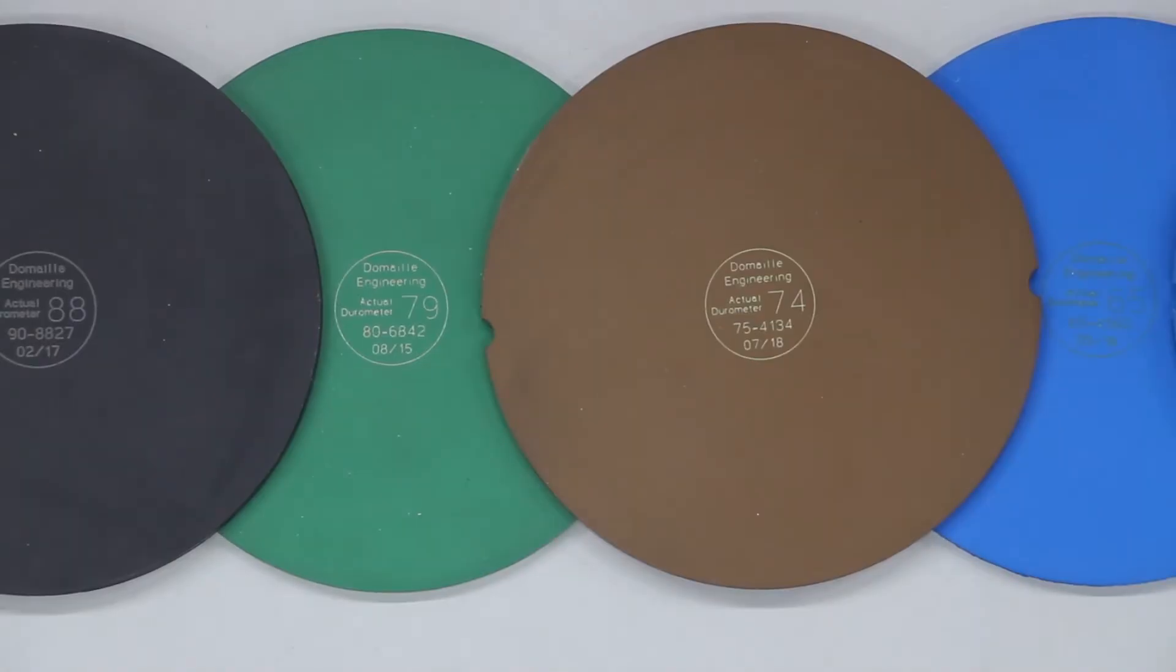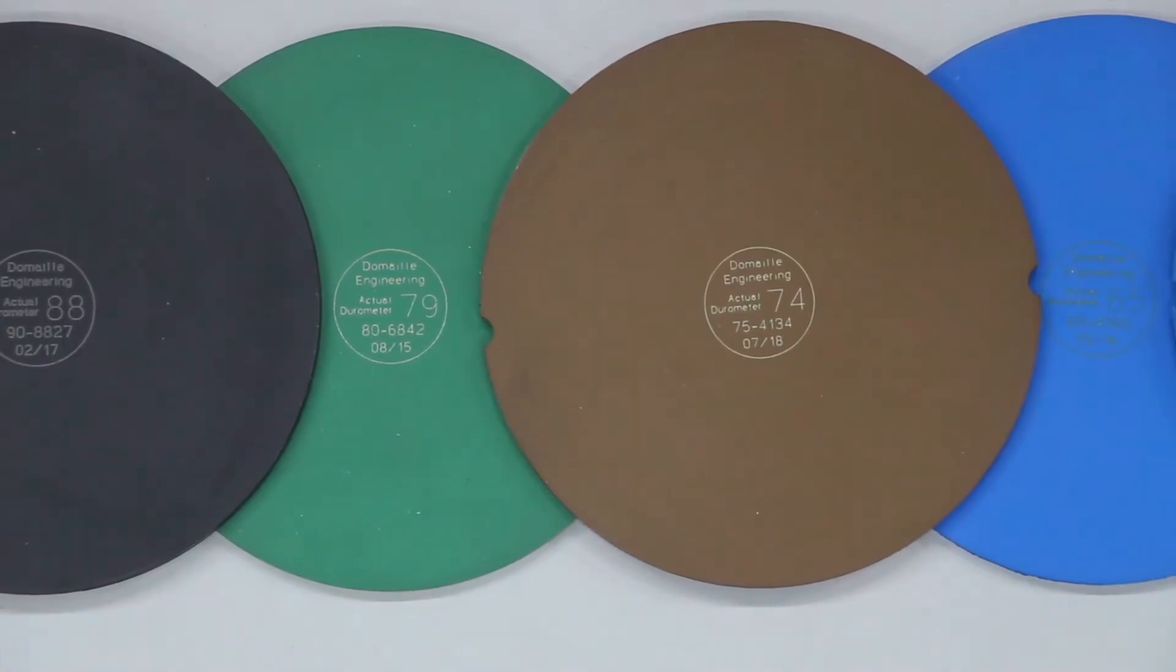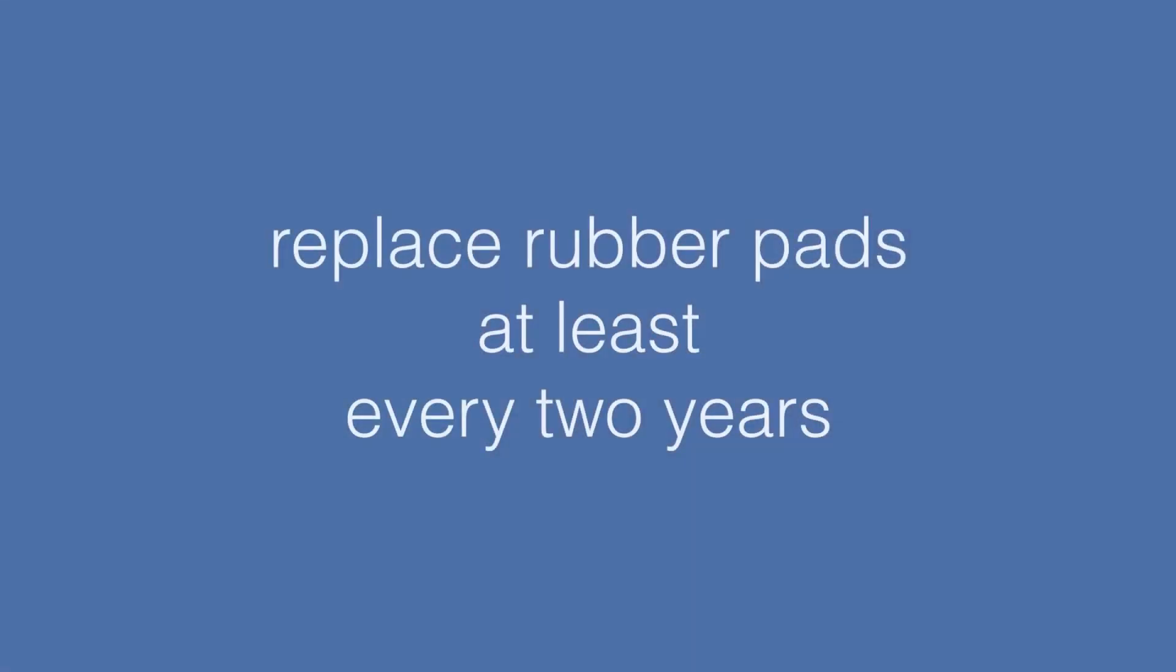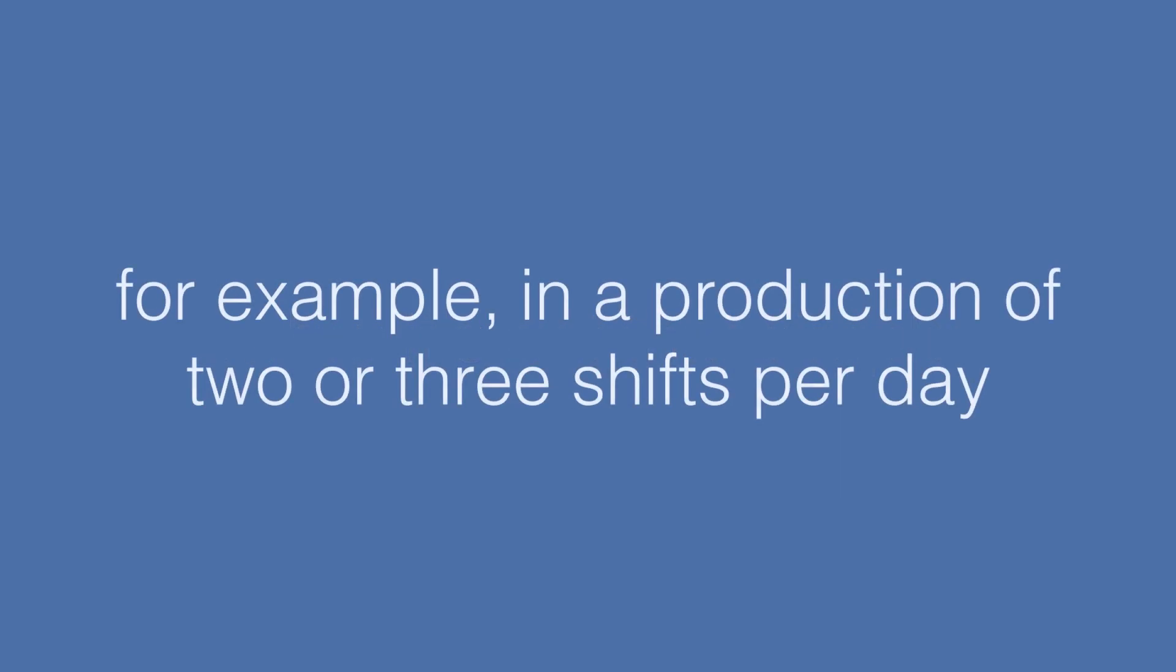Domeo pads are available in hardness steps of 5 durometer and list the targeted and actual hardness as well as the date of manufacturing. We recommend replacing rubber pads at least every two years. Probably sooner, but you need a system to review the pads.